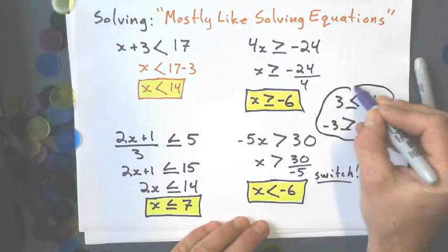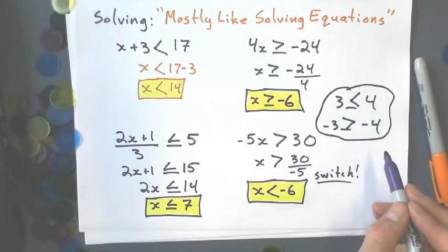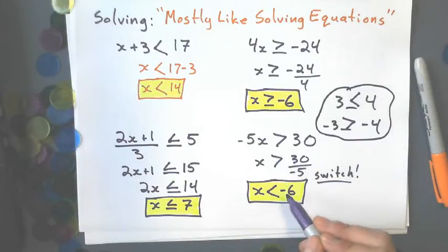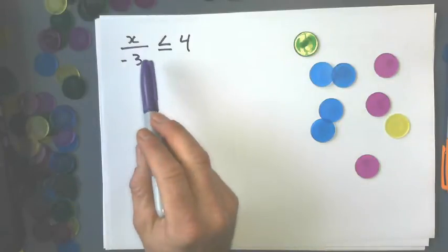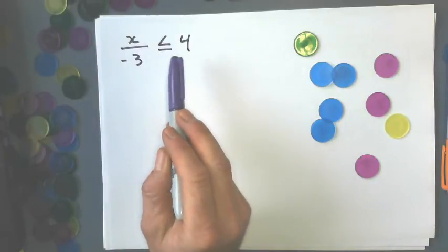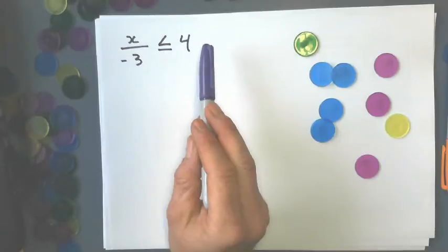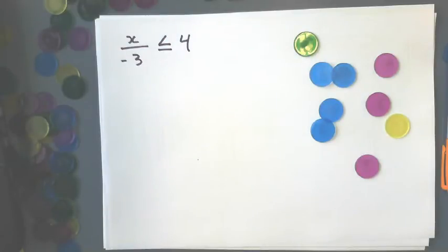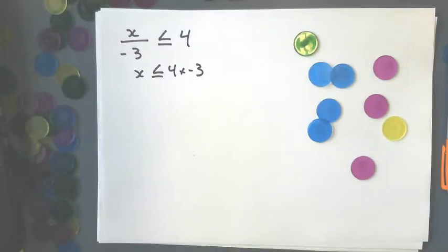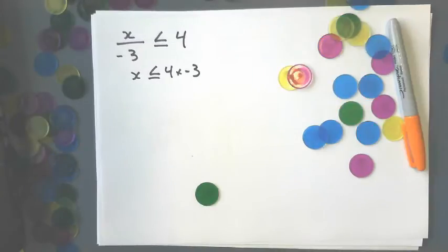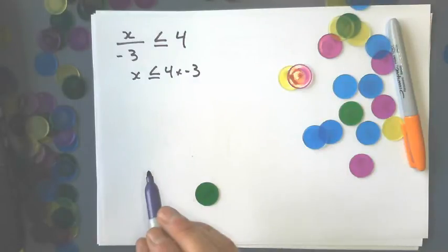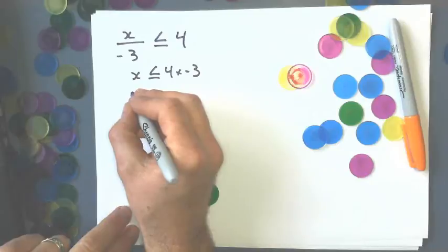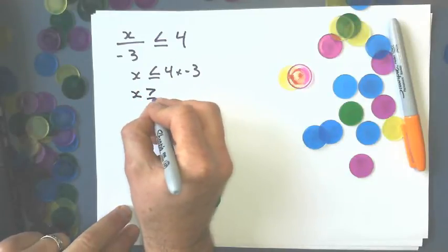So, you know, because of this way the number line is set up, that's why we do these. Next example here, x/-3 ≤ 4, so to solve this one I'd multiply the other side by -3, like this. Okay, and like my previous example, if I multiply or divide by a negative number when I'm solving inequations, I switch the direction of the sign.